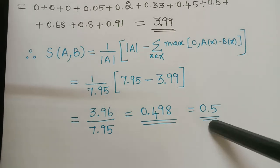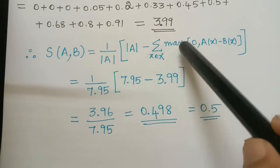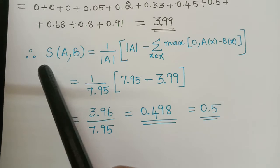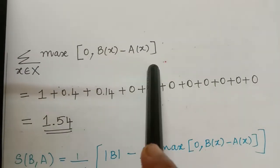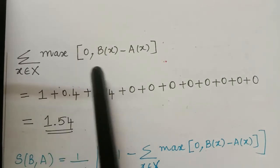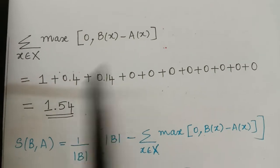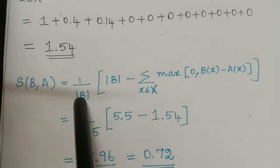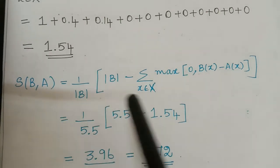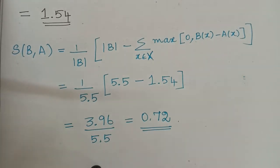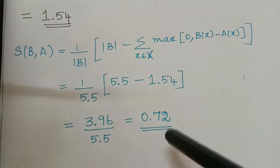In a similar manner we calculate S(B, A). The formula changes to (1/|B|) × (|B| - Σ max(0, B(x) - A(x))). Evaluating the summation of max(0, B(x) - A(x)) for x from 0 to 10 and summing gives 1.54. Substituting |B| = 5.5: 5.5 - 1.54 = 3.96, and 3.96 / 5.5 = 0.72. Therefore the degree of subsethood of fuzzy set B in fuzzy set A is equal to 0.72.